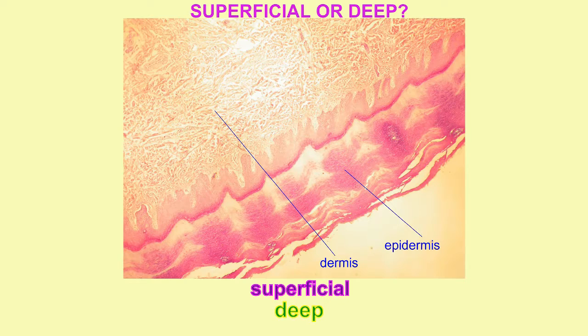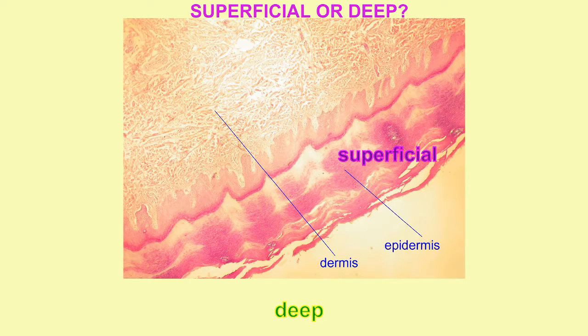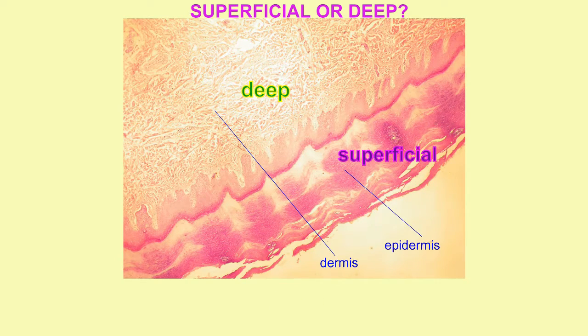One can use superficial and deep with layers of the skin. For example, the epidermis is the superficial layer of the skin, while the dermis is deep to the epidermis.